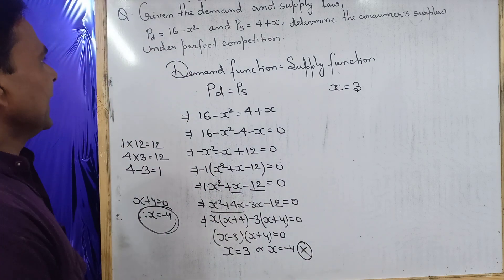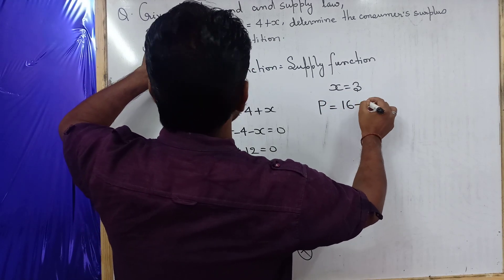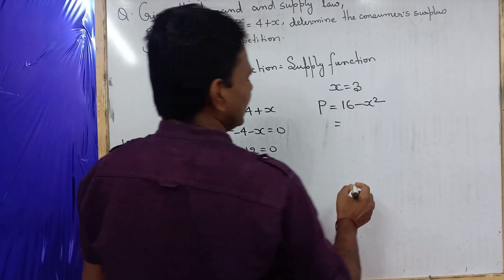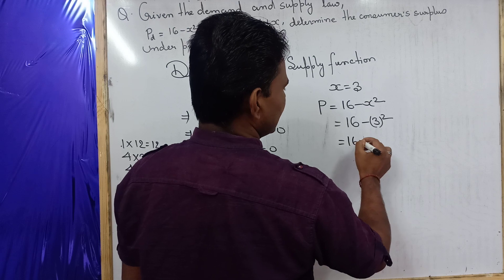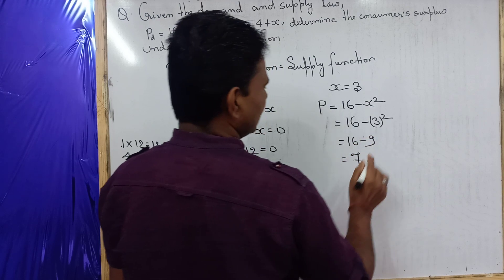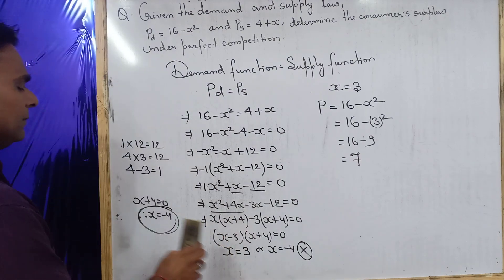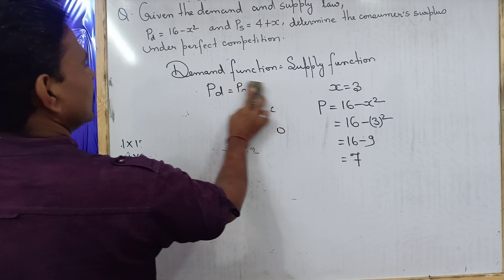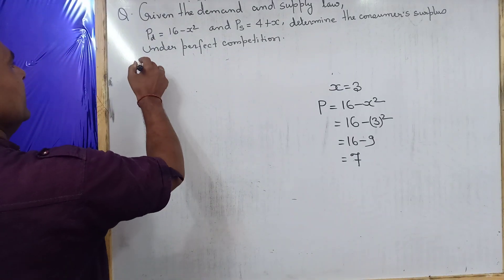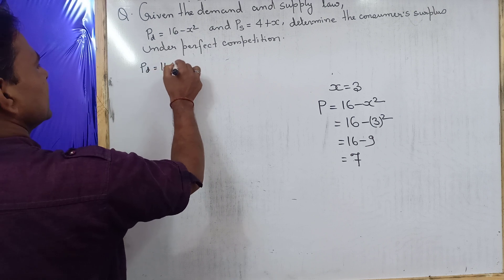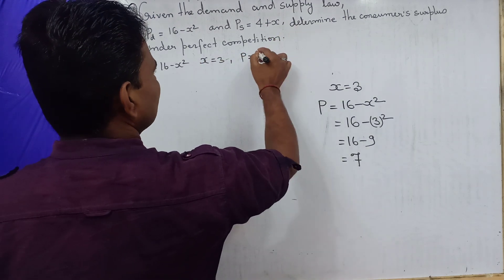Now it is time to get the price. Using the demand function: p equals 16 minus x squared. We have already got x equal to 3, so p equals 16 minus 3 squared, which is 16 minus 9, and finally we get p equal to 7. So x equals 3 and p equals 7.